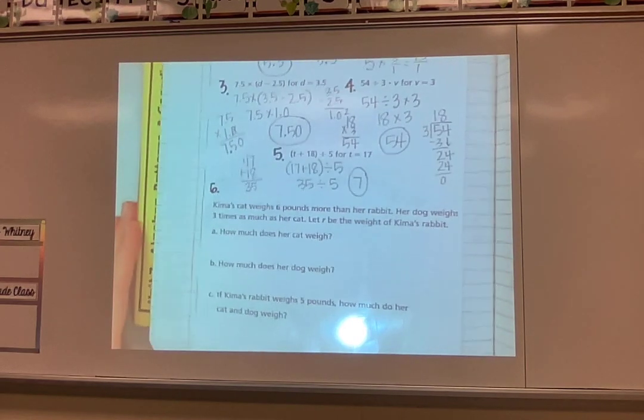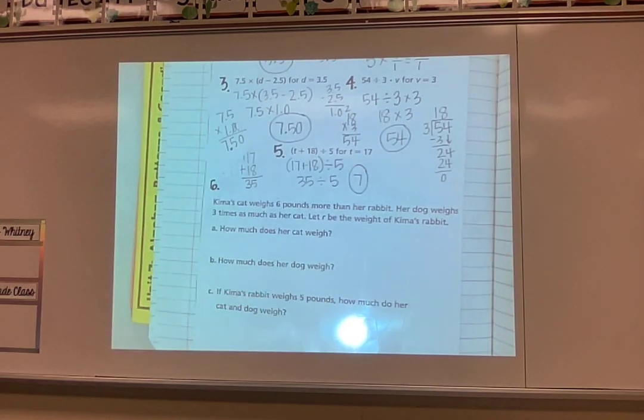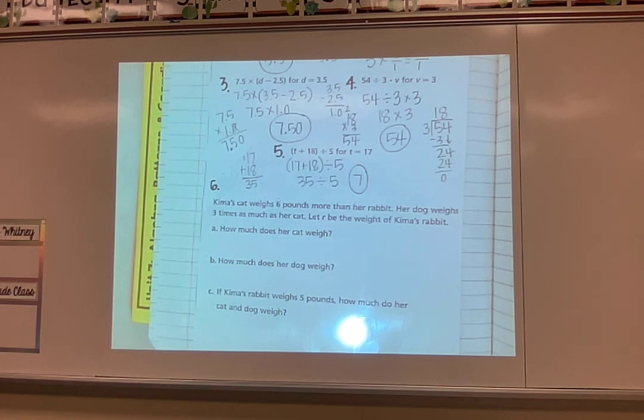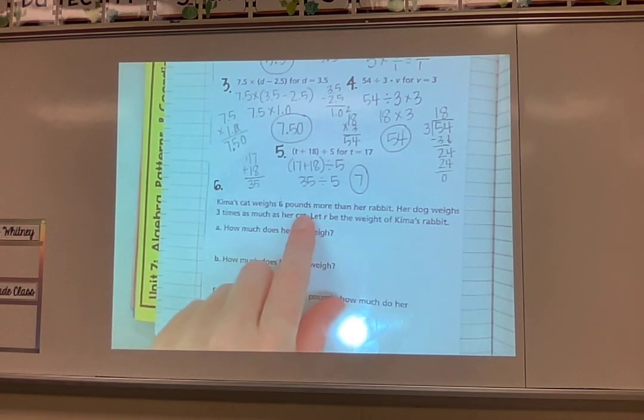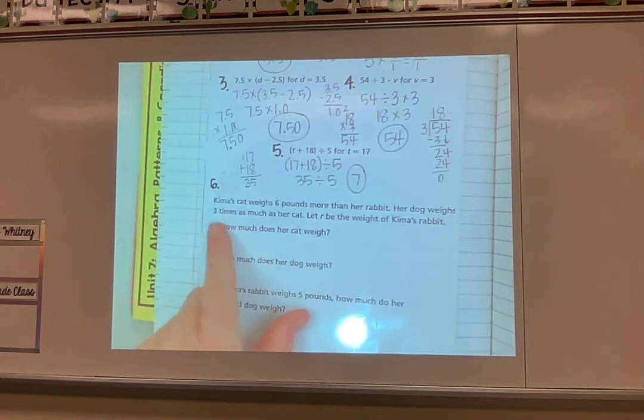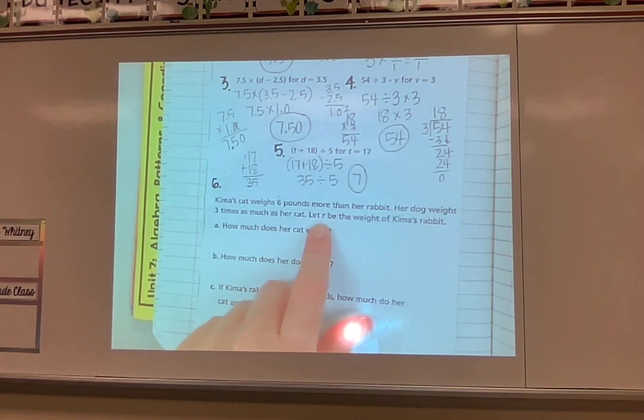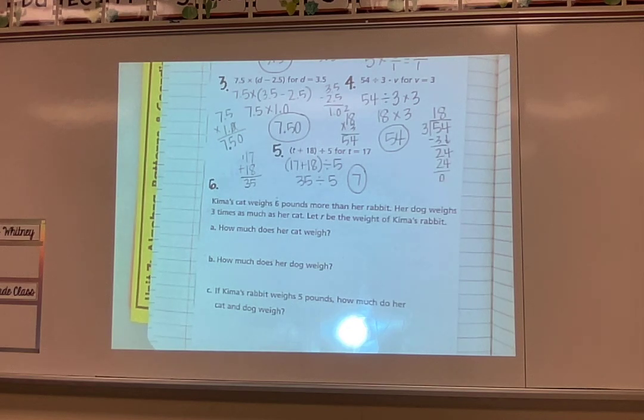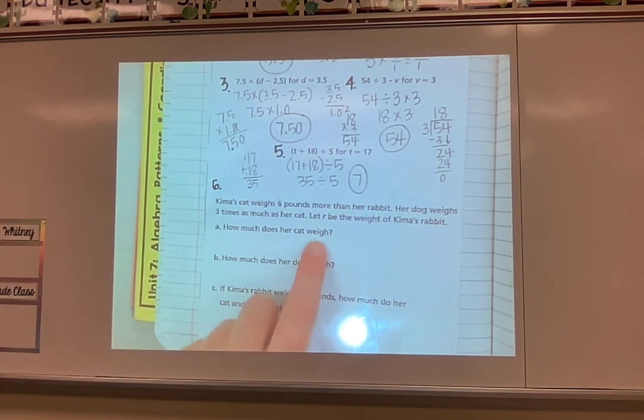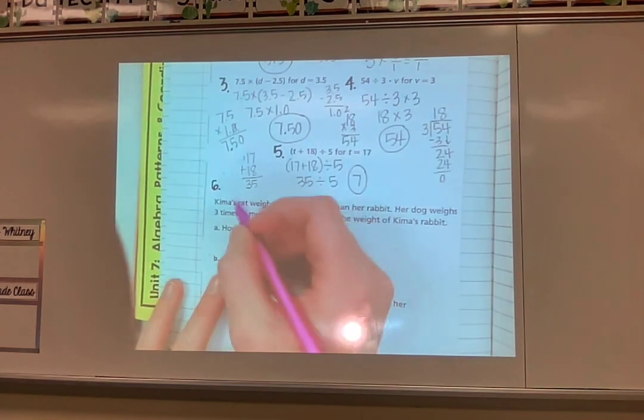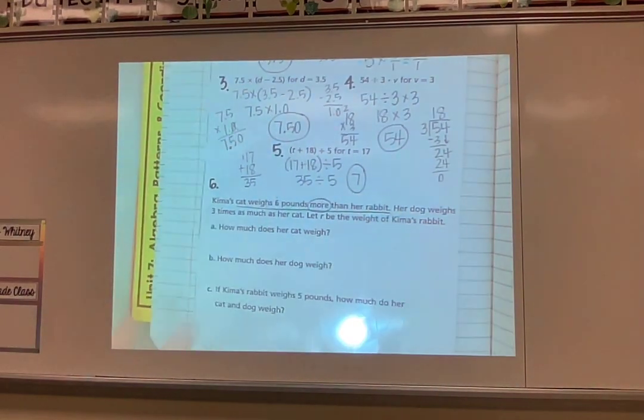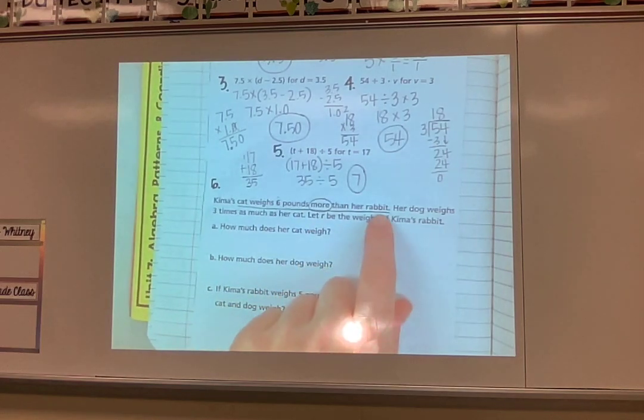I'm going to do number 6 as well. This is the last one in our notes before you start on your assignment. This is a little bit trickier. They're giving us the information, and we have to write one of these equations, and then we'll solve it at the very, very end. So we have to read the information they give us and then make an equation out of that. So we don't know how much her rabbit weighs. We're just going to use an R because that stands for rabbit. Let's see what it wants us to do. How much does her cat weigh? So I'm going to go back and find the information about her cat. It says, Kim's cat weighs 6 pounds more than her rabbit. Oh, I saw the word more. That's probably going to be important. And it weighs more than her rabbit. And remember, rabbit is R.